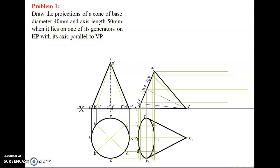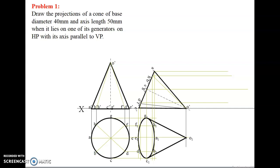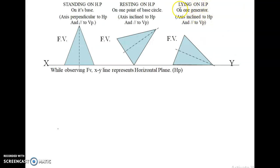We have seen three conditions. This question is based on the third condition — lying on HP on one generator. In this condition, the axis will be inclined to HP and parallel to VP. Imagine a cone lying on HP, which is the horizontal plane, with one of its generators. At that time, the axis will be inclined to HP and parallel to VP.